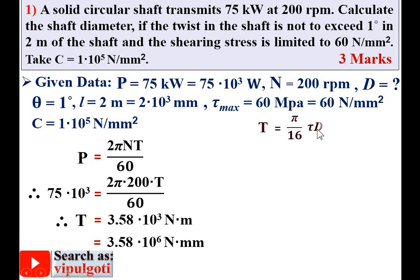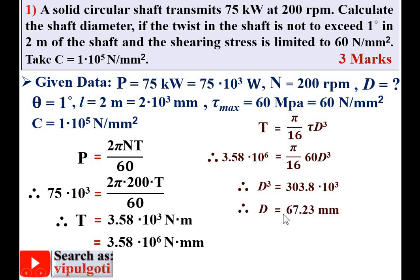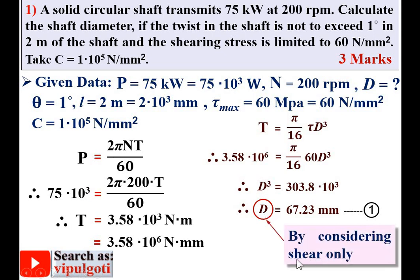Using the torsion formula T = (π/16) × τ × D³, substitute T = 3.58 × 10⁶ and τ = 60 N/mm². Solving gives diameter D = 67.23 mm. This is the first answer — the shaft diameter considering shear stress only. Call this Equation 1.